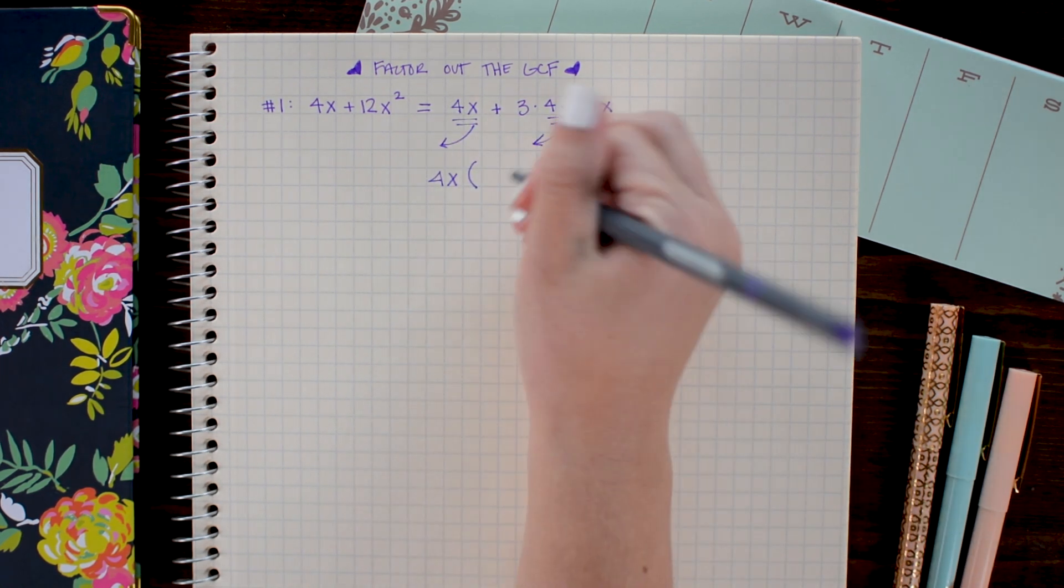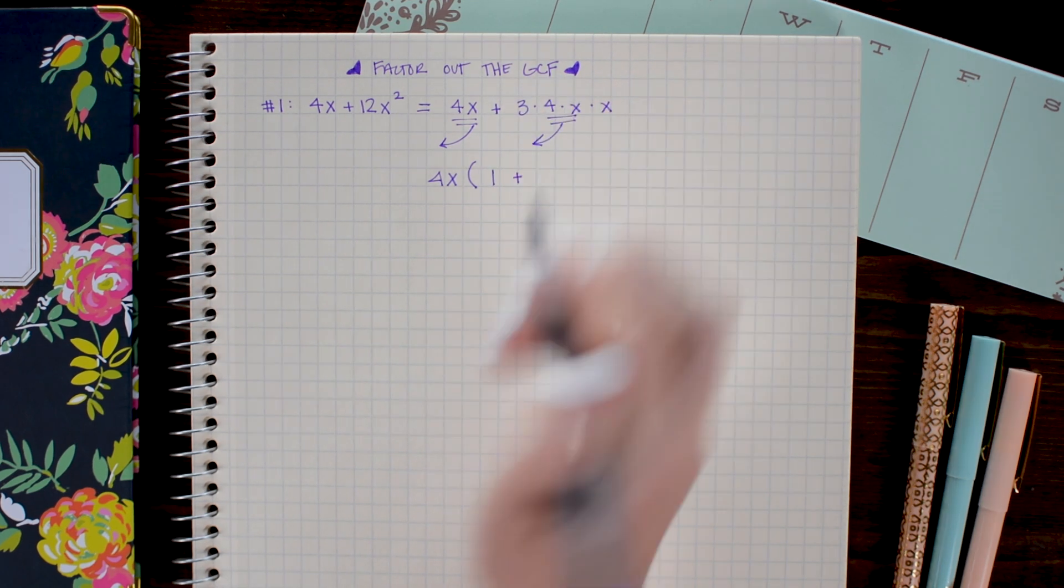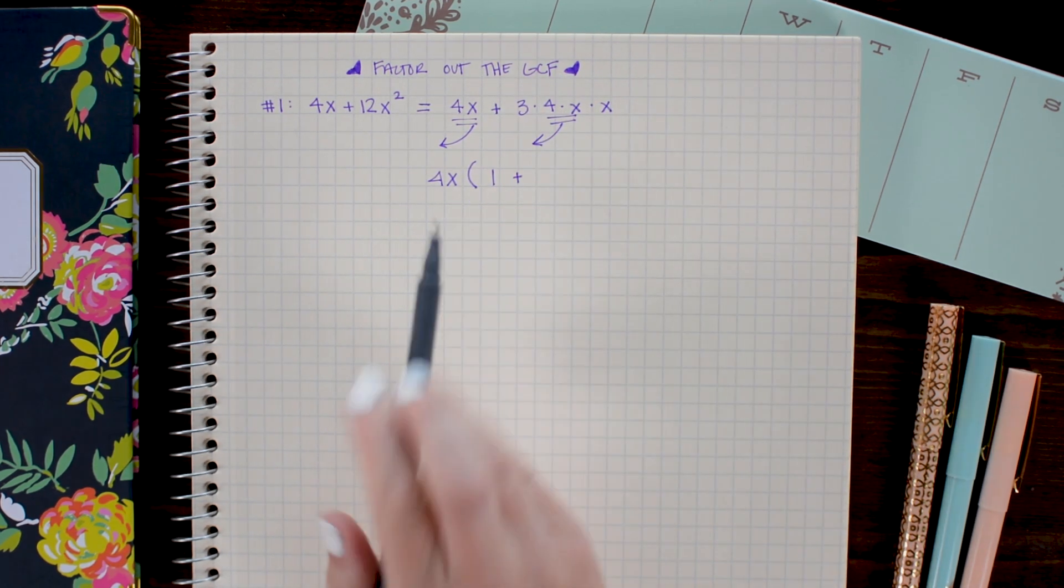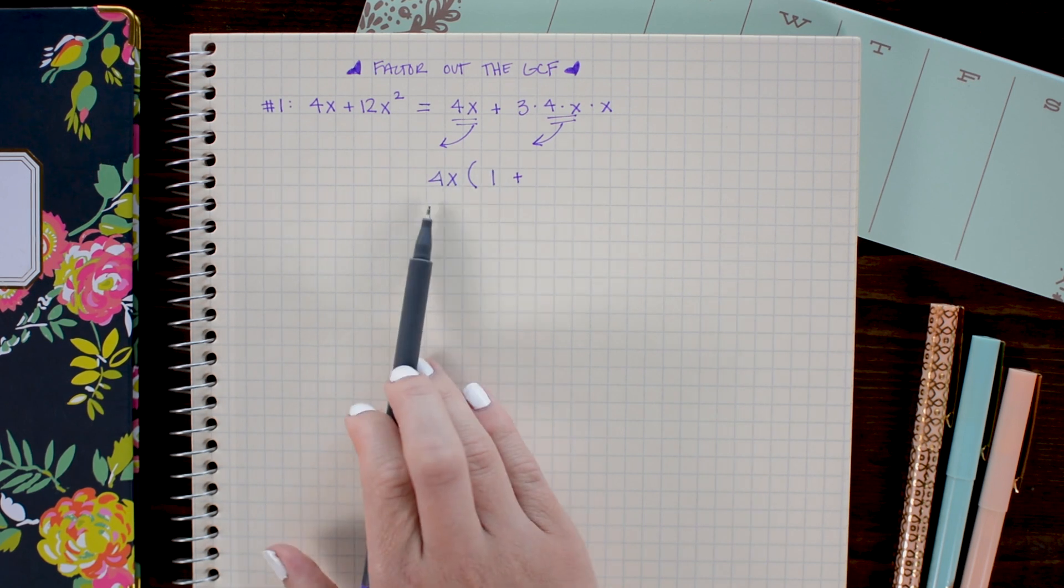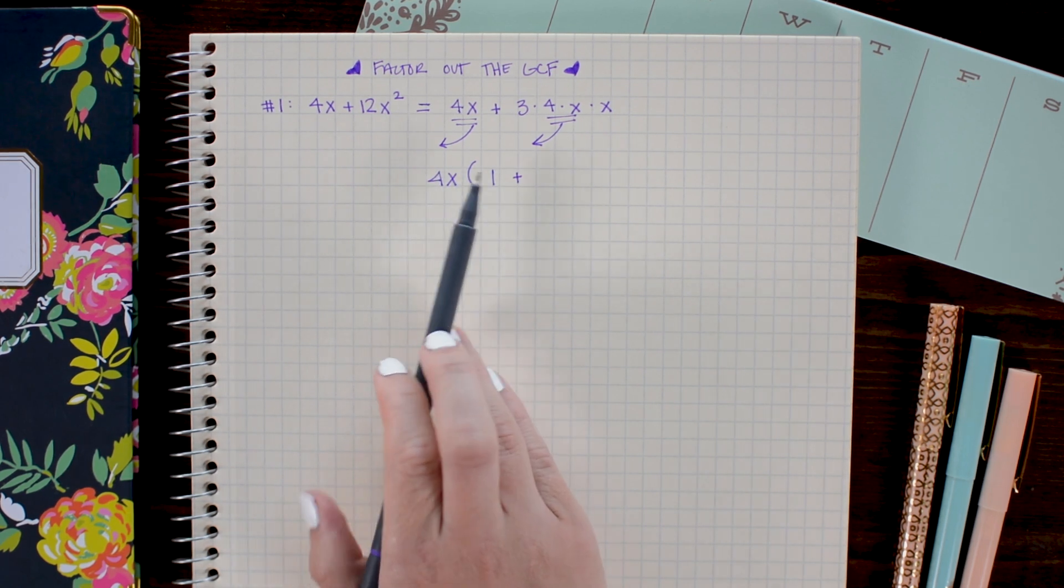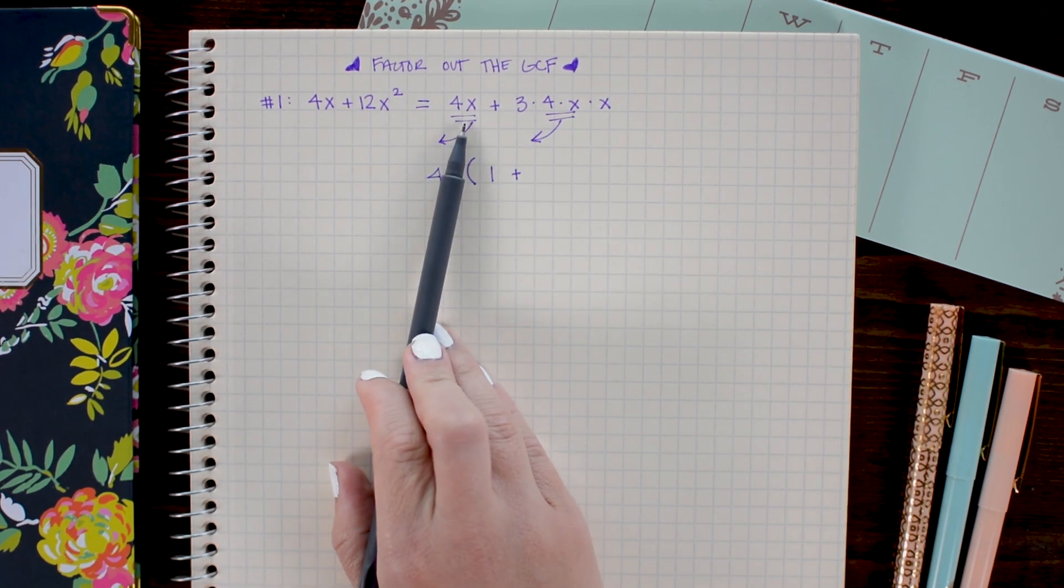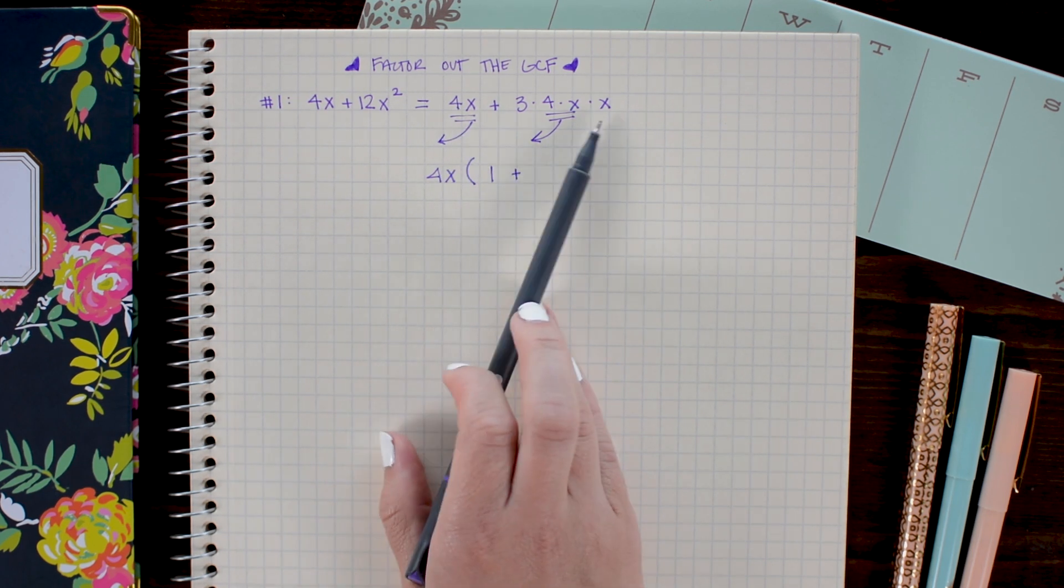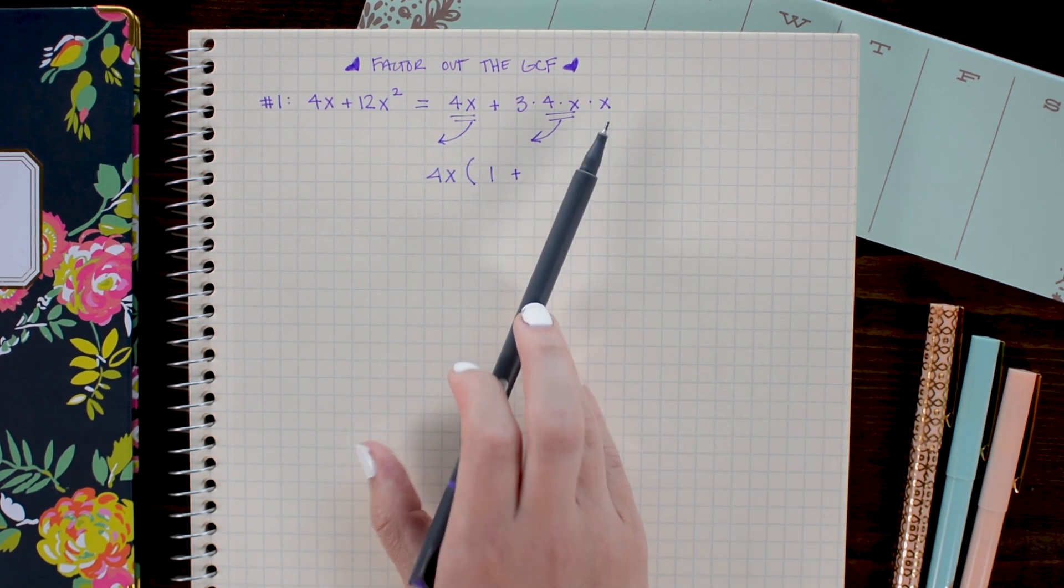It is extremely important that if you factor out an entire term, you write a placeholder 1 in its place. This ensures that when I multiply the 4x back through, I do get the 4x term that I started with. And here we'll have 3x left behind from the second term.